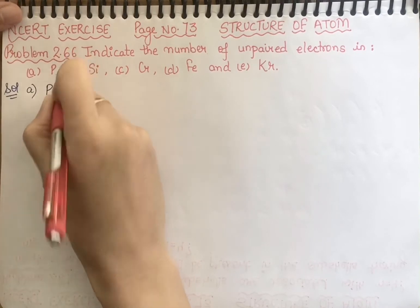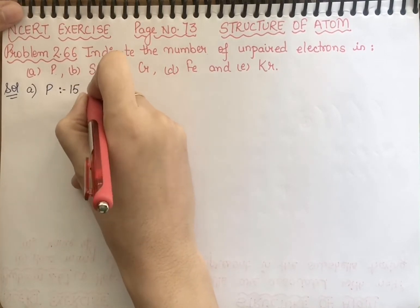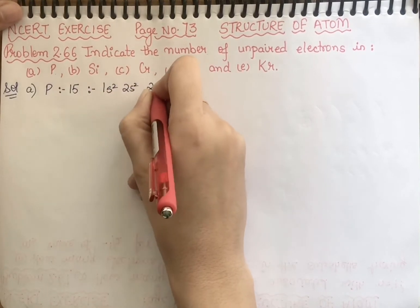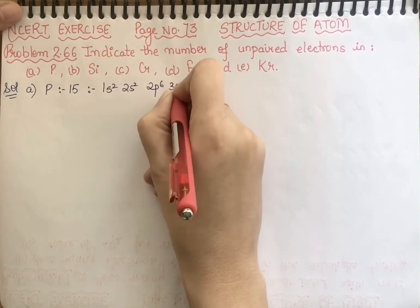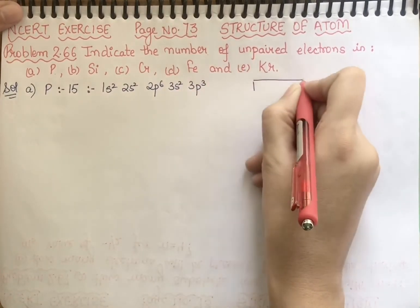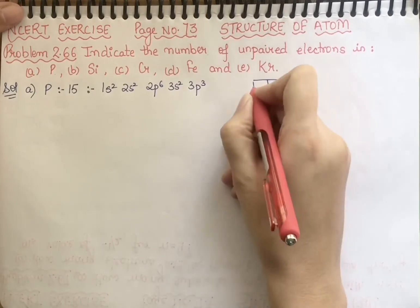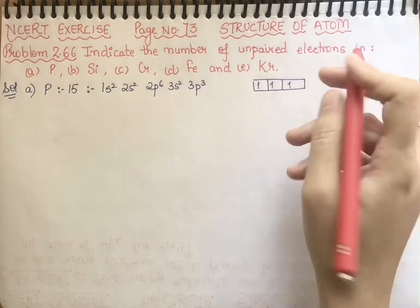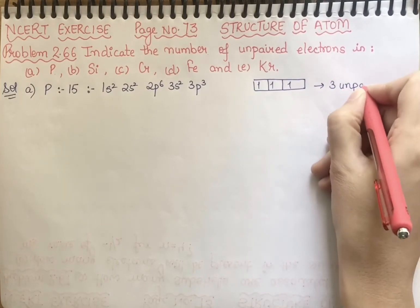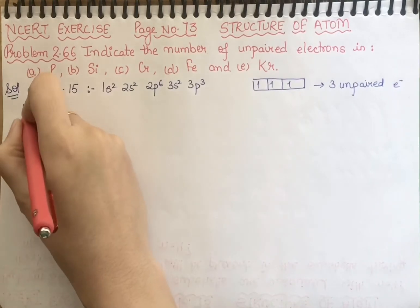Phosphorus, which is atomic number 15. Its electronic configuration is 1s2, 2s2, 2p6, 3s2, and 3p3. For the last subshell, you can draw the p orbital: 1, 2, 3. So how many unpaired electrons? 3 unpaired electrons in the case of phosphorus.